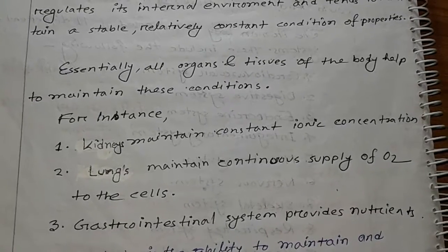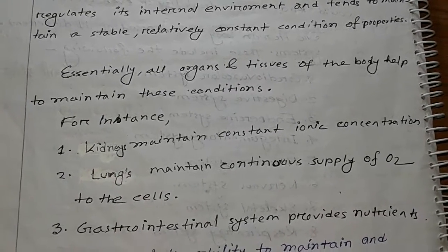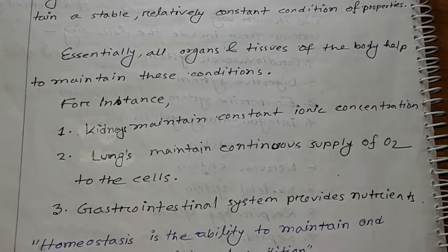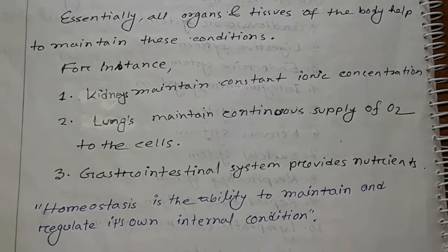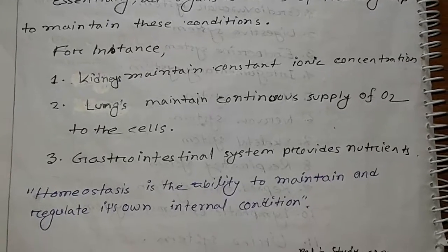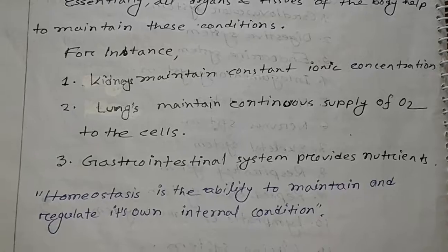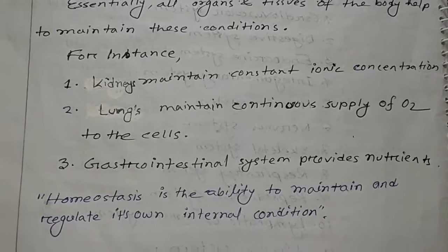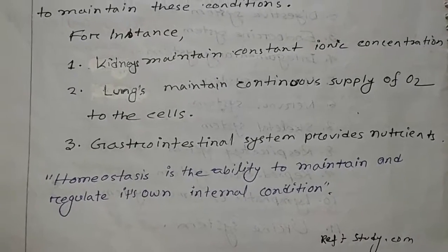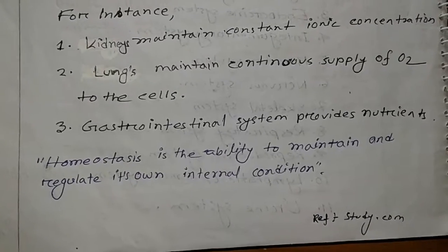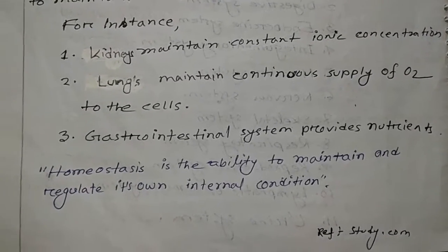Essentially all organs and tissues of the body help to maintain these conditions. For instance, the kidneys maintain constant ionic concentration, the lungs maintain a continuous supply of oxygen to the cells, and the gastrointestinal system provides nutrients. Another simple definition: homeostasis is the ability to maintain and regulate one's own internal condition.